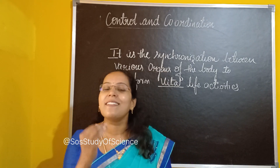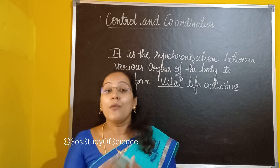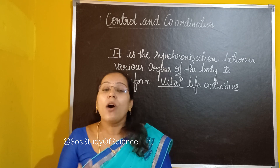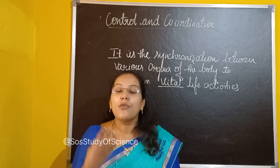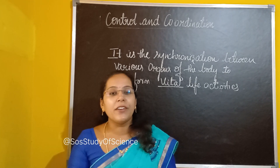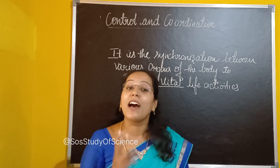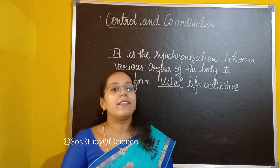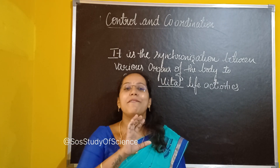So in this lesson, firstly I am explaining control and coordination in case of animals. We consider ourselves as animals too. So how does control and coordination happen in our body? In case of animals, control and coordination is mainly taken care of by two important systems — firstly the nervous system, and secondly the endocrine system. Let's make sure you understand these two systems in a very clear way.